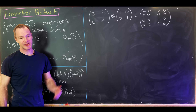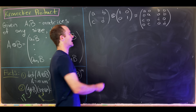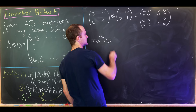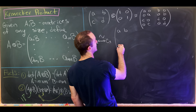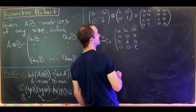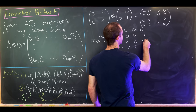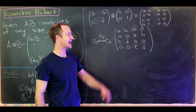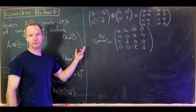Let's swap columns 2 and 3. After that swap, our matrix has columns reorganized so that the a and c entries are grouped and b and d entries are grouped. Swapping two columns multiplies the determinant by -1. So the determinant of the new matrix is the negative of the determinant of the original.